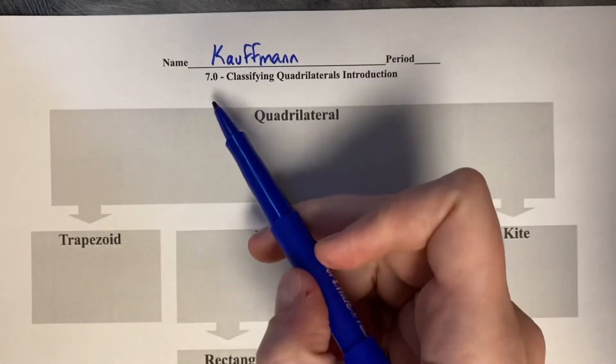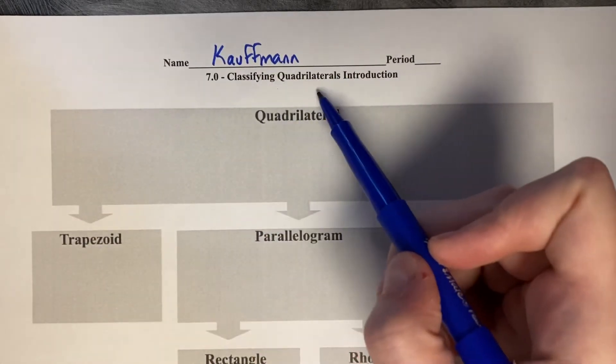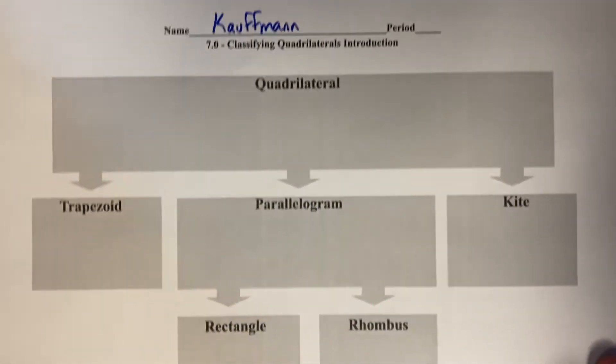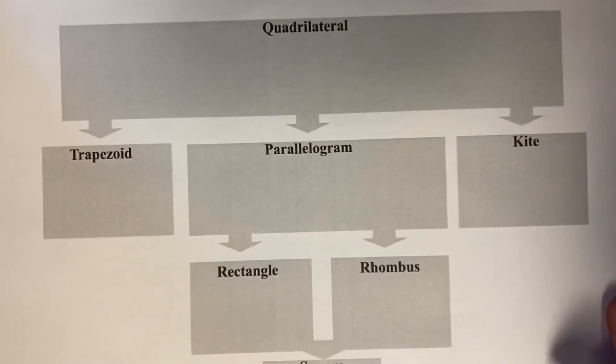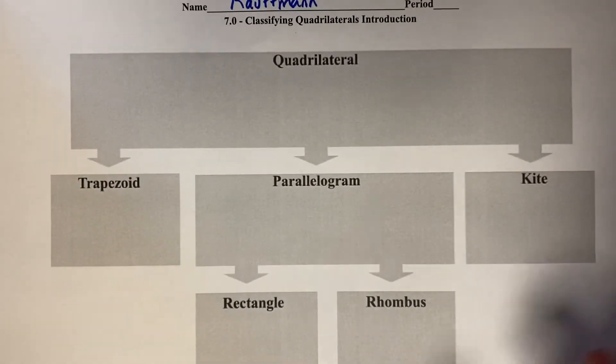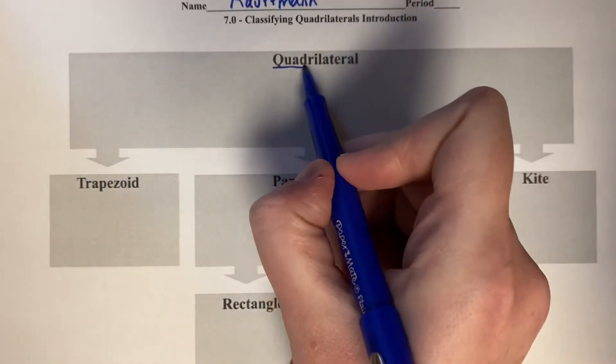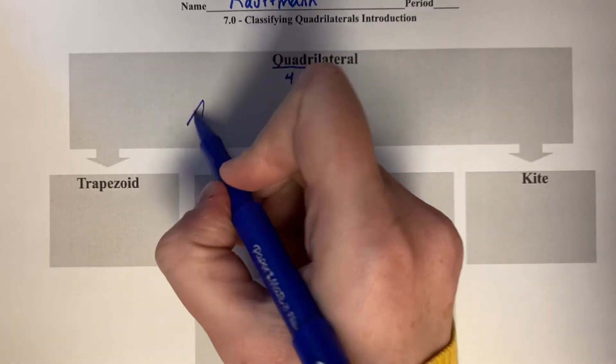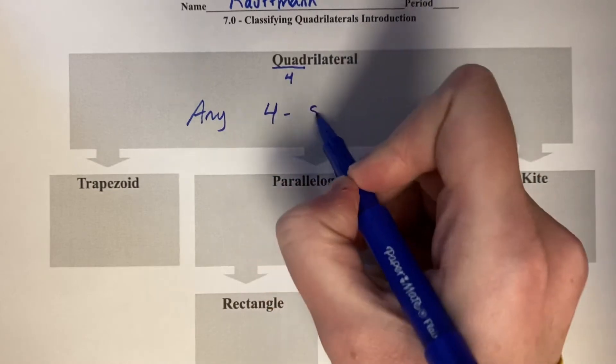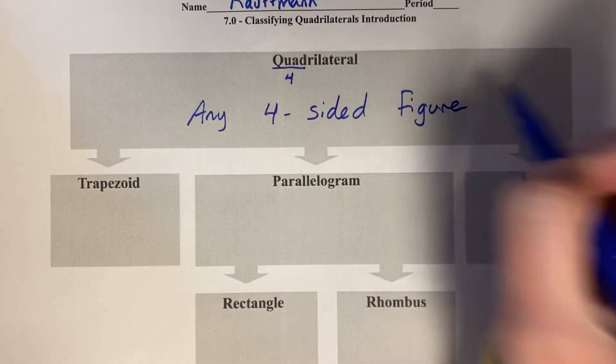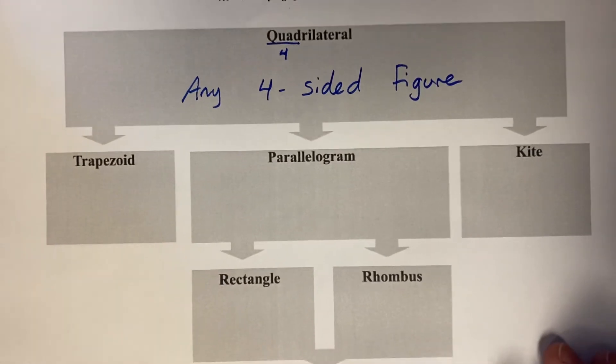7.0 classifying quadrilaterals introduction. So this is the hierarchy of quadrilaterals. We are specifically talking about four-sided figures. The prefix quad stands for four, so a quadrilateral is any four-sided figure. This is the most generalized name.